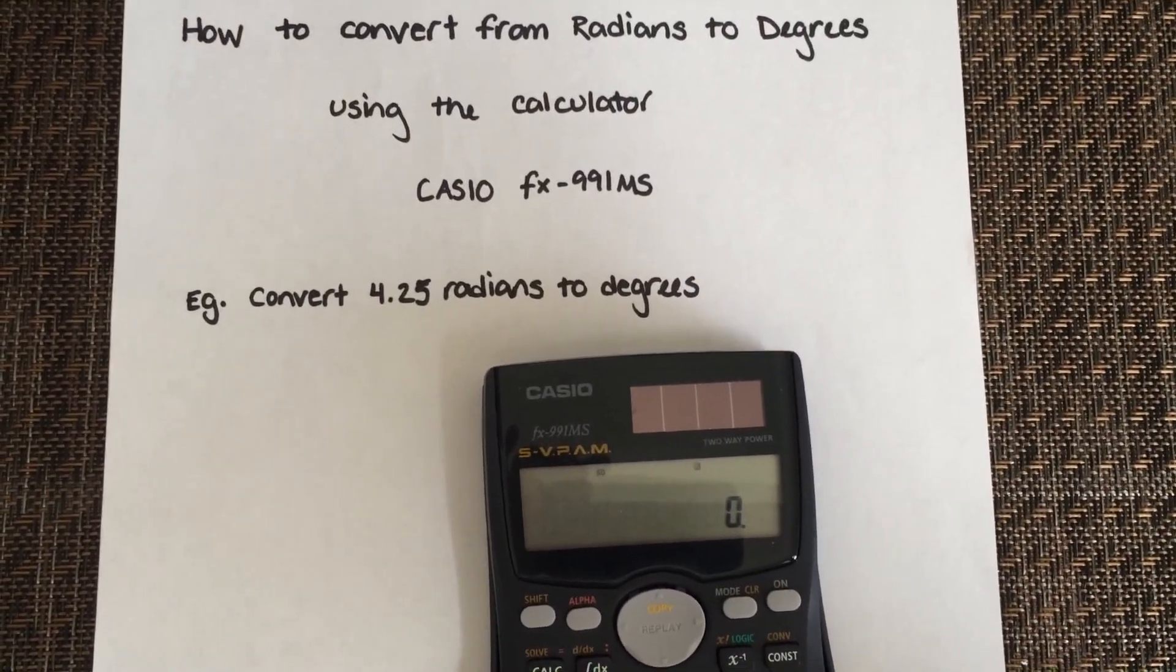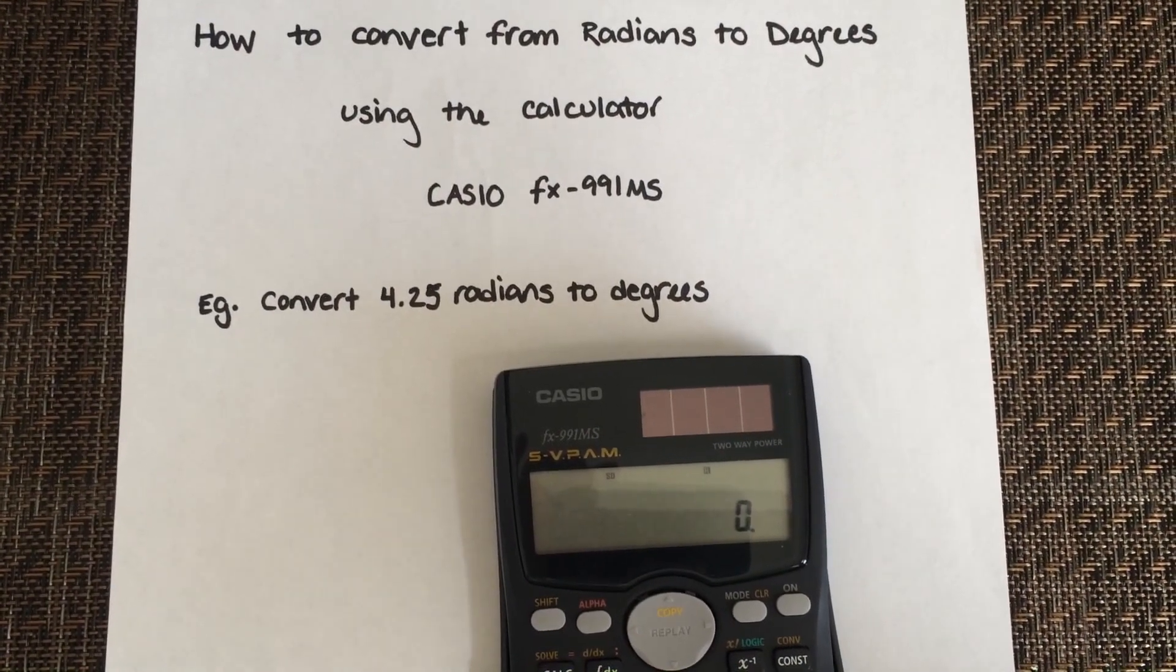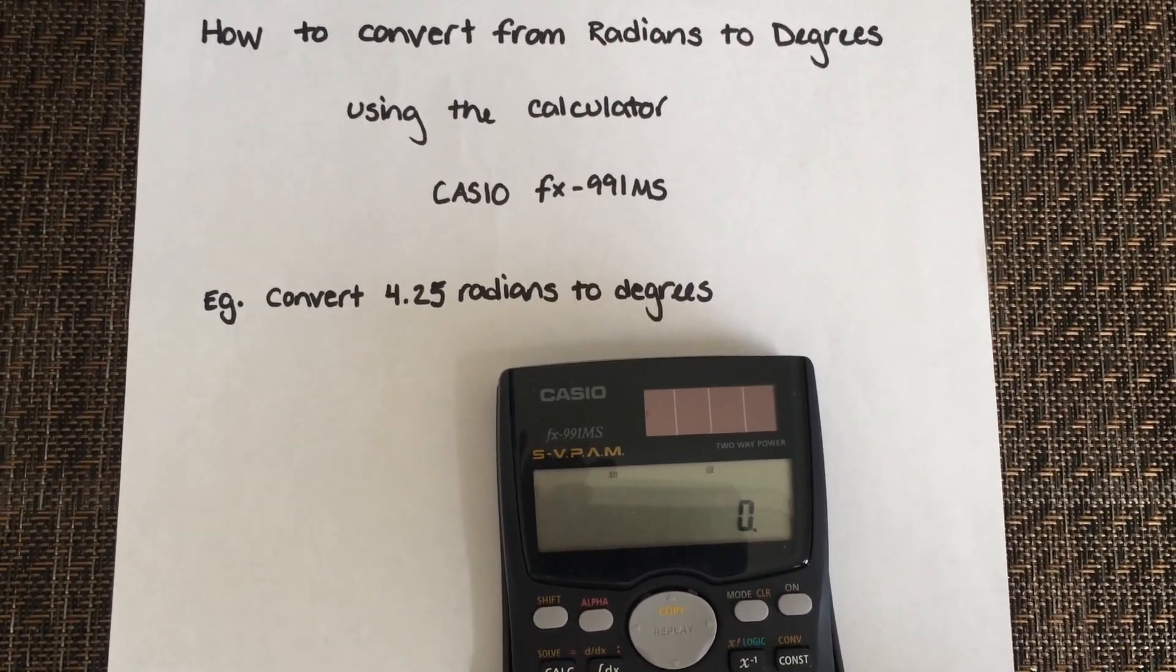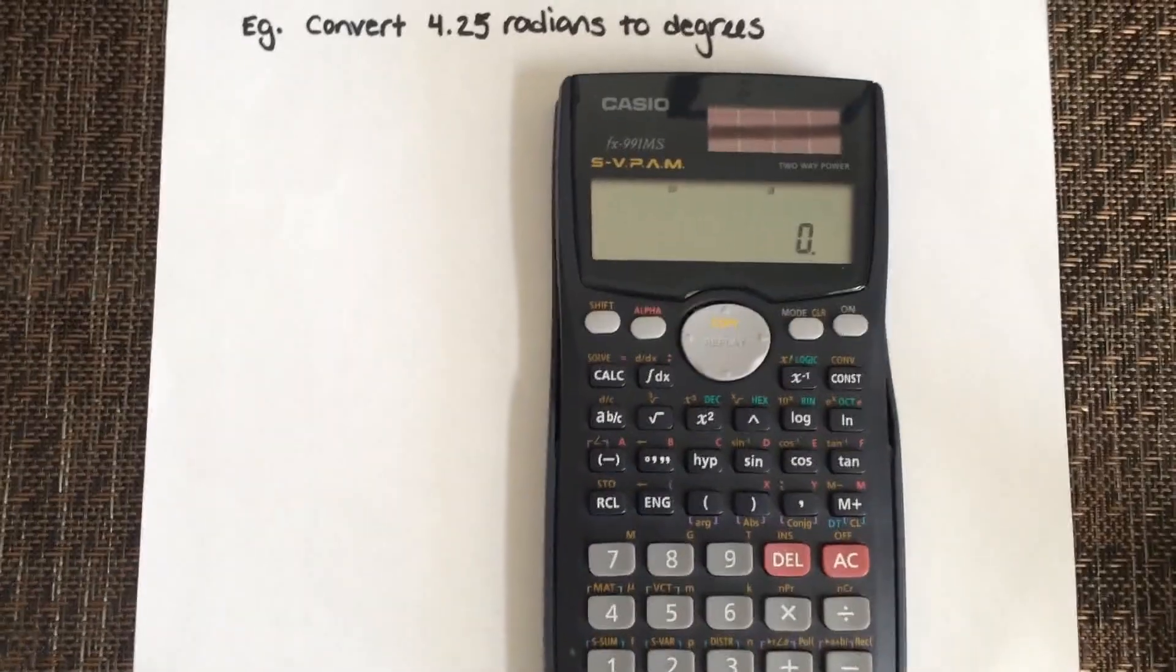How to convert from radians to degrees using your calculator Casio FX991MS. I'm going to show you how to convert this example: 4.25 radians to degrees.